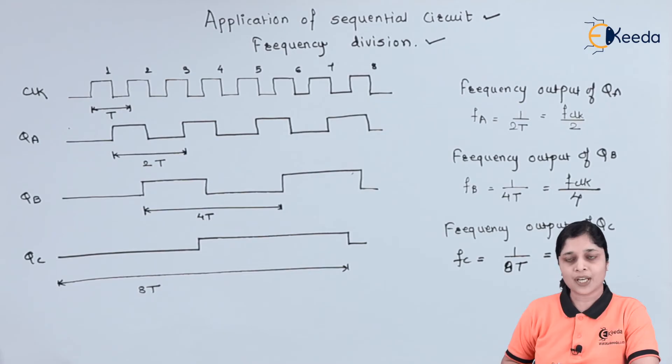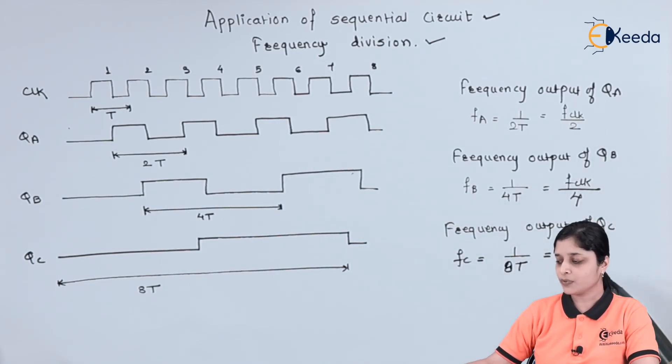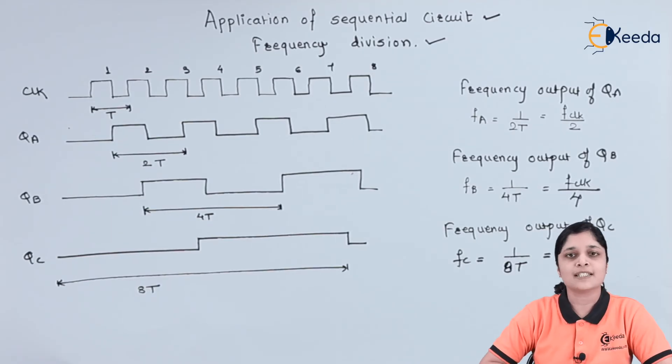So in this way, after getting all these equations, what we have achieved? We have achieved the frequency division. That is, in first case divided by 2, it is divided by 4, and it is divided by 8. In this way, this is the application of sequential circuit in terms of frequency division.